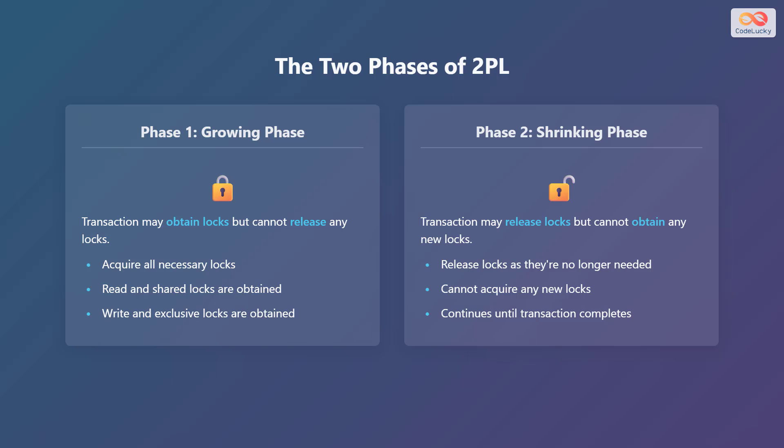In phase two, the shrinking phase, a transaction may release locks but cannot obtain any new locks. Locks are released as they are no longer needed, and the transaction cannot acquire any new locks, continuing until the transaction completes.